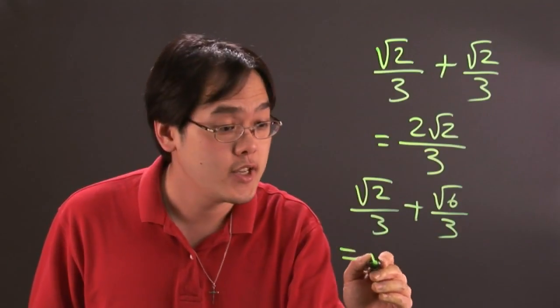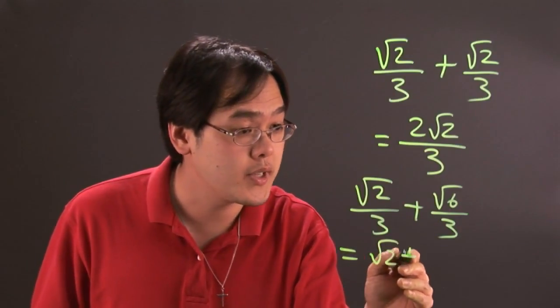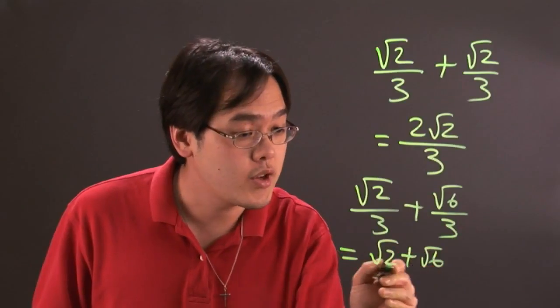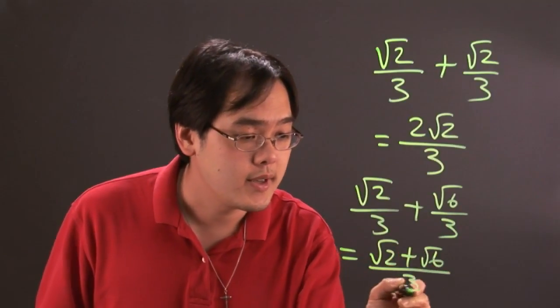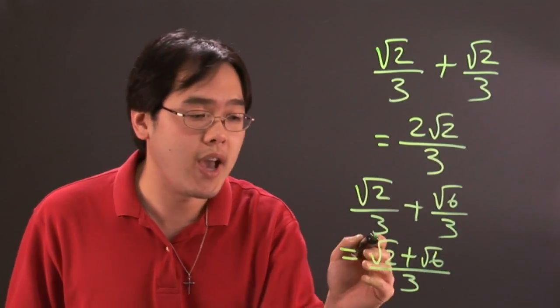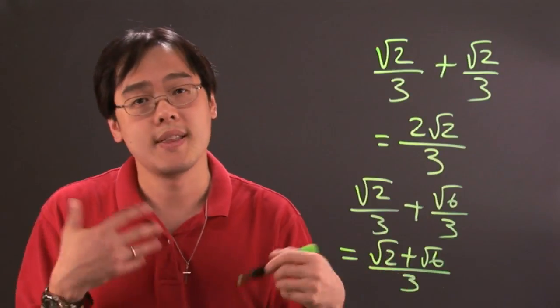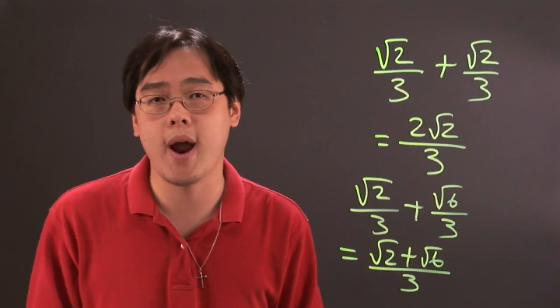You have to write them like this: square root of 2 plus square root of 6. You can combine them as one fraction with the same denominator, but you have to keep the terms separate because that's the best you can do. The numbers underneath the radical are different.